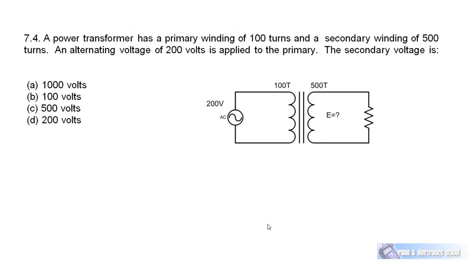Question 7.4: A power transformer has a primary winding of 100 turns and a secondary winding of 500 turns. The turns ratio is 100 to 500, which is the same as 1 to 5. Since the turns ratio equals the voltage ratio, for every volt on the primary there are 5 volts on the secondary. With 200 volts on the primary, the secondary voltage is 1000 volts.